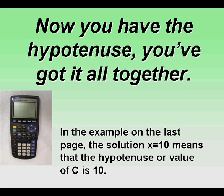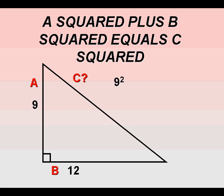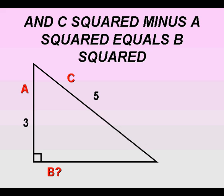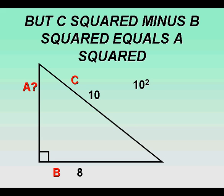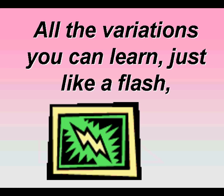Now you have the hypotenuse. You've got it all together. A squared plus B squared equals C squared. And C squared minus A squared equals B squared. A squared plus B squared equals C squared. But C squared minus B squared equals A squared.